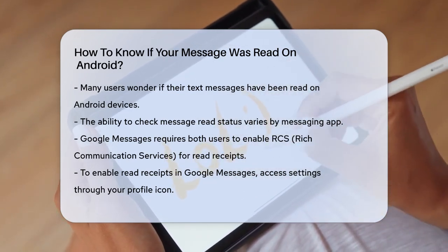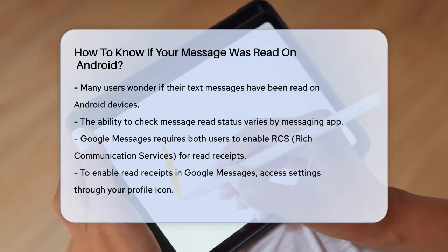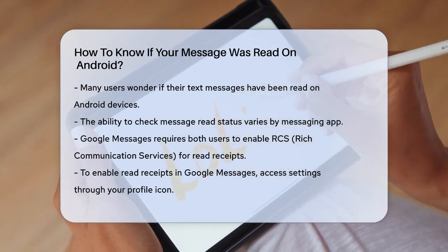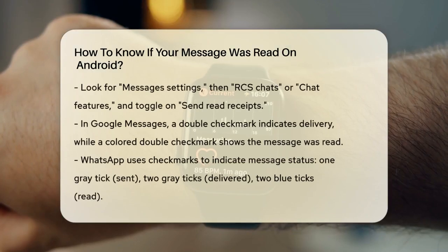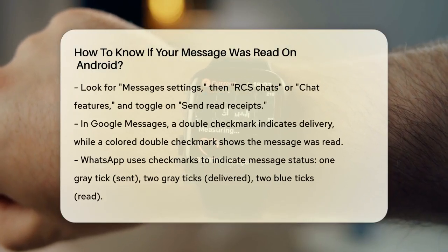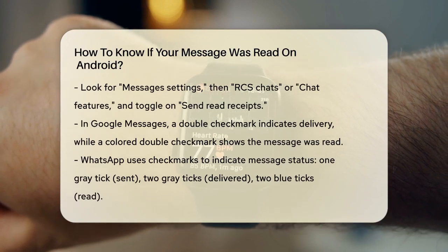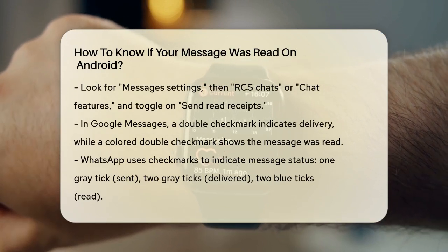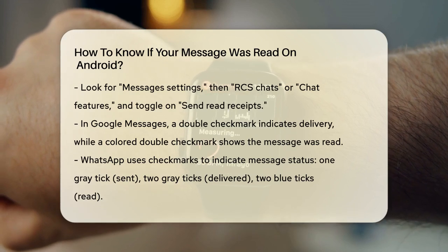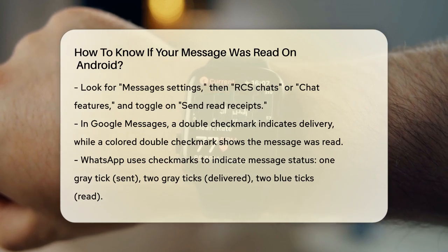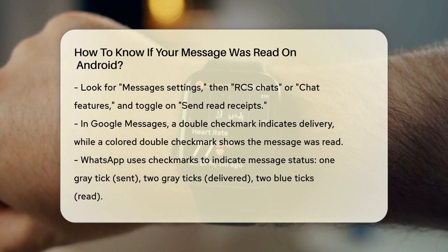Open Google Messages on your Android device. Tap your profile picture or icon in the upper right corner and select Messages Settings. Go to RCS Chats, or Chat Features if you can't find RCS Chats. Turn on the Send Read Receipts toggle. Once this is enabled, you'll see a double checkmark when the message is delivered to the recipient's inbox, and it will change to color-filled double checkmarks when the person reads it.